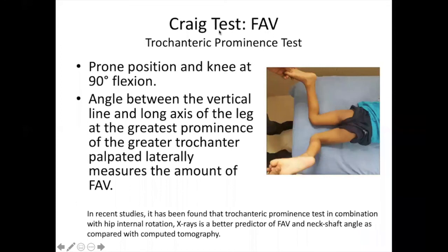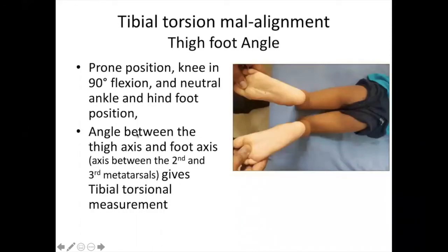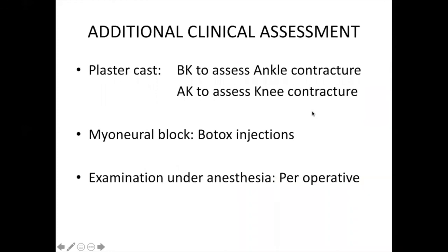The Craig test is performed in prone position — doing internal and external rotation, finding the maximum point of the greater trochanter, and measuring the angle. If it is 35 to 45 degrees, that is called increased femoral anteversion. The foot-thigh angle for tibial torsion is marked clinically using a marker or eye assessment.